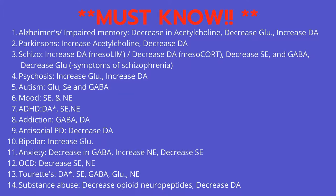Number one: Alzheimer's or impaired memory — decreased acetylcholine, decreased glutamate, and increased dopamine. The opposite of Alzheimer's is Parkinson's. Number two: Parkinson's disease — increased acetylcholine and decreased dopamine.